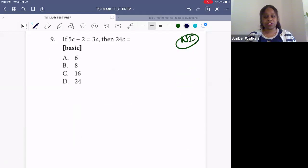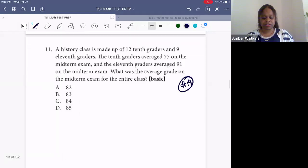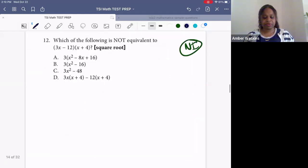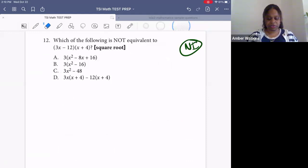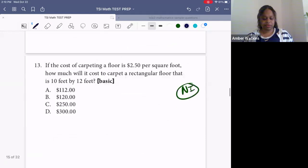Number nine, this is no longer included. You're solving for C and figuring out what 24C is, not included anymore. Number ten, included, figuring out slopes. Eleven, finding probability, included. Number twelve, which of the following is not equivalent, this is included on it. I didn't mean to mark it as not included. This is on the new test.